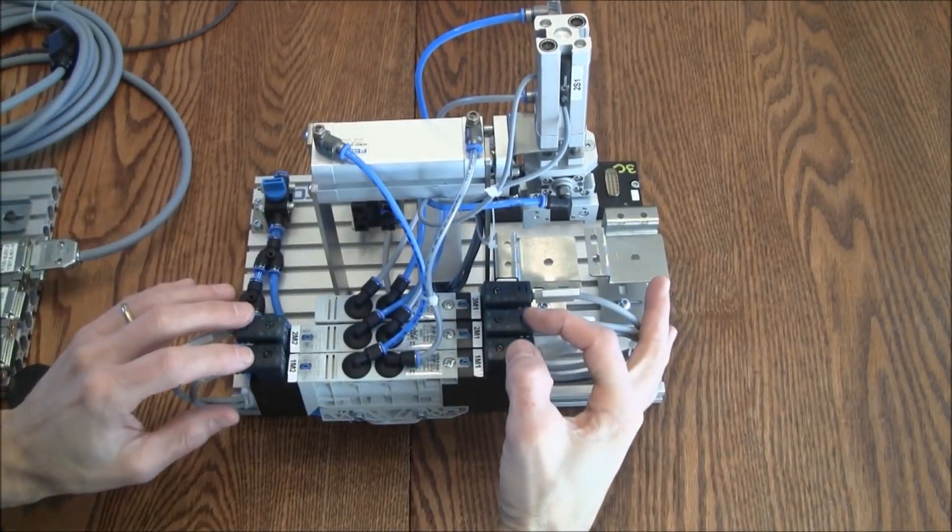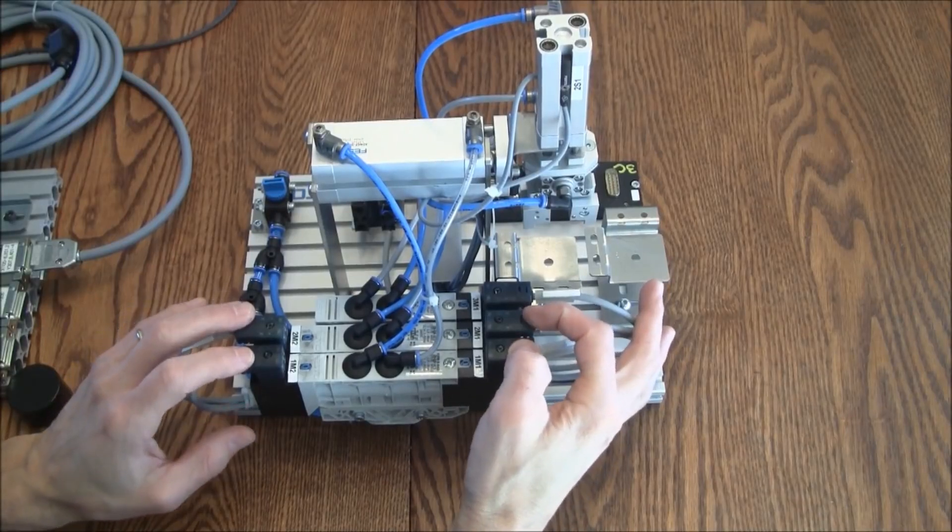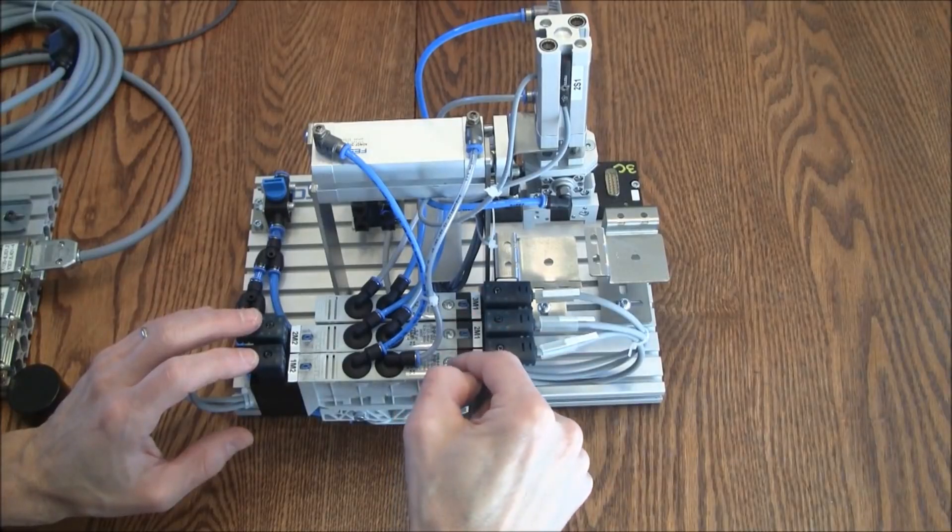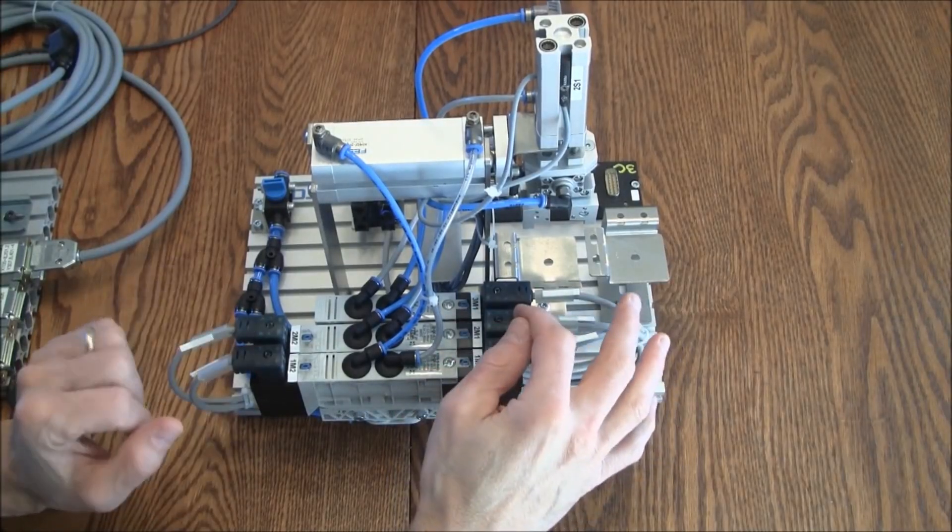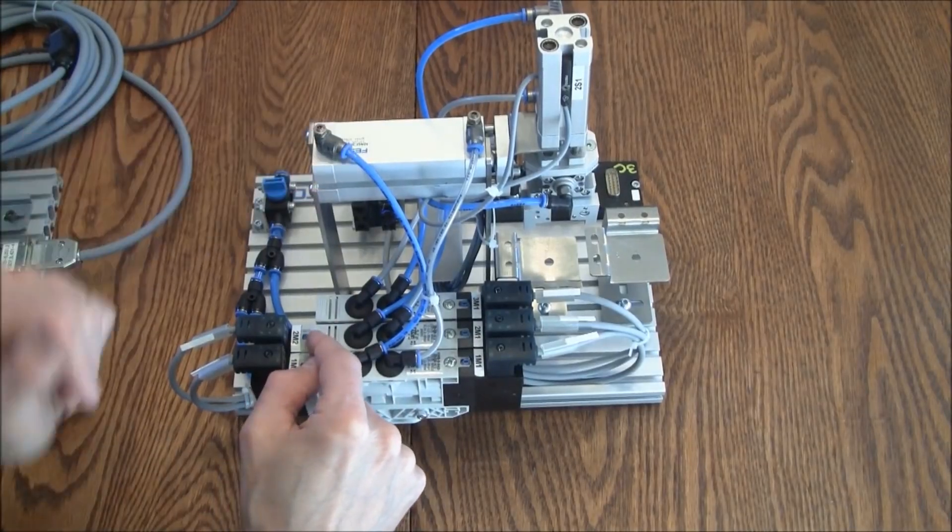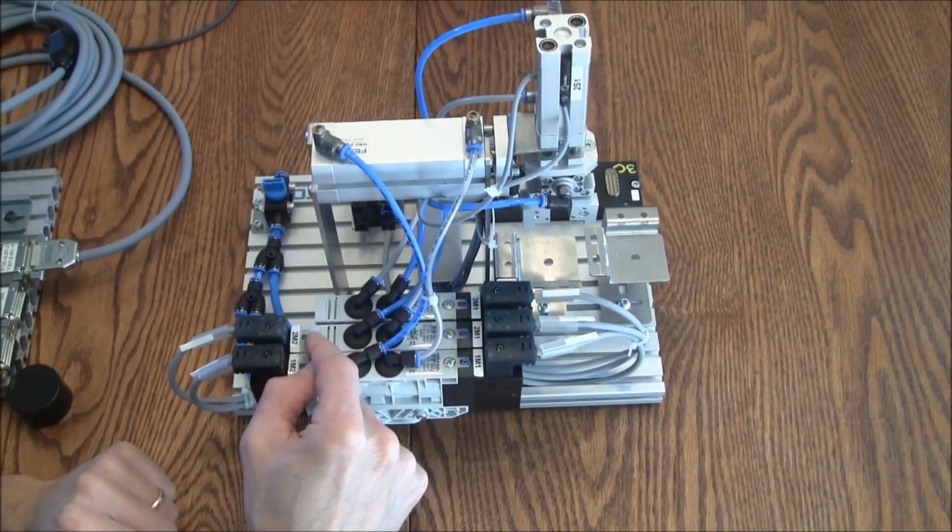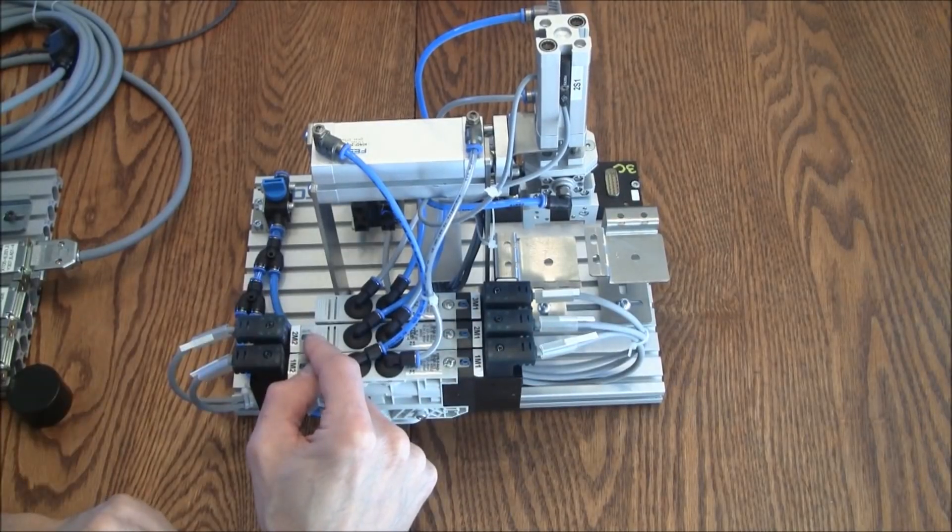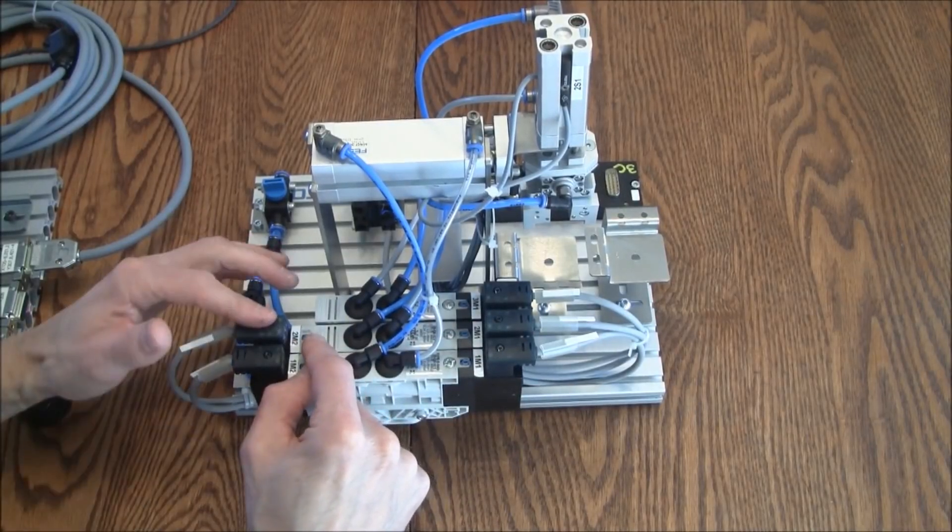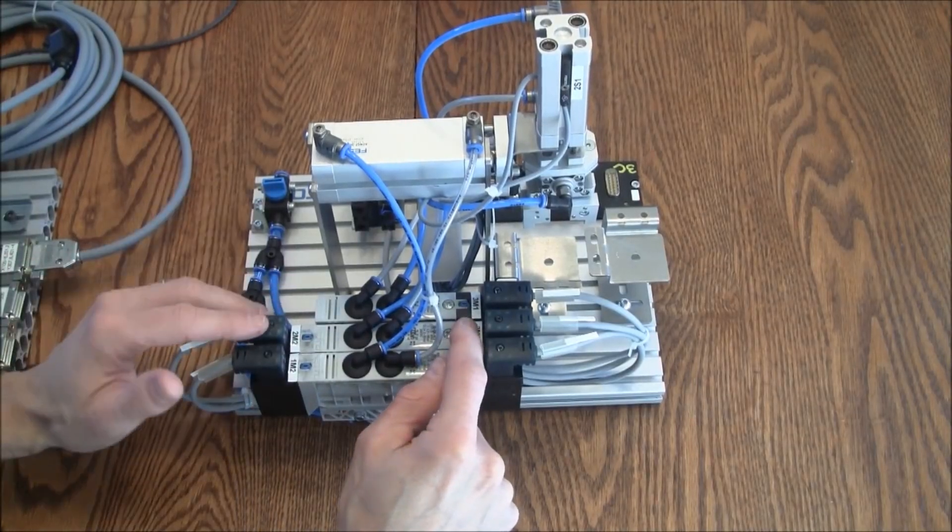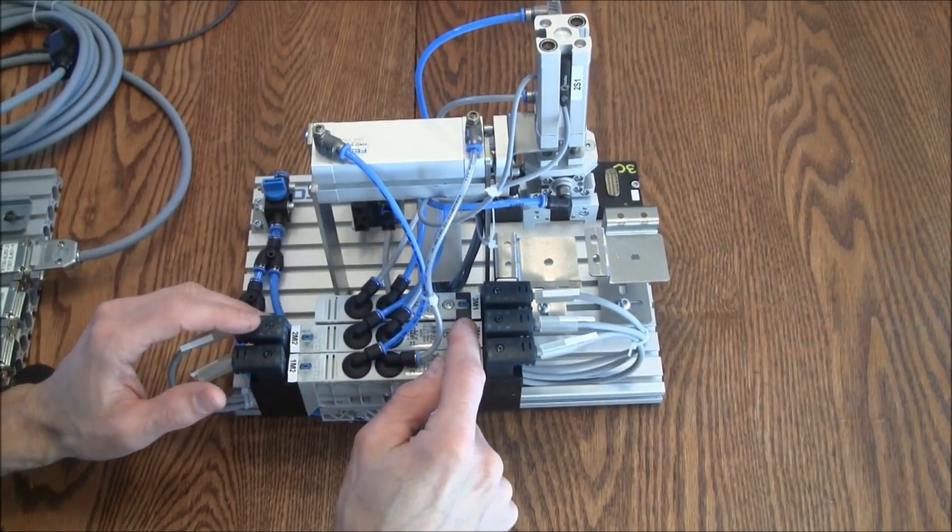With these double solenoid controlled valves and cylinders, they're also four two ways. When I energize one of the solenoids the spool will shift and the cylinder will move into a particular position. When I de-energize it, it will stay in that position because of a detent. When I energize the opposing solenoid, that spool will shift causing that cylinder to move into the other position.